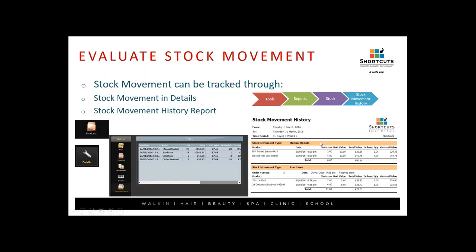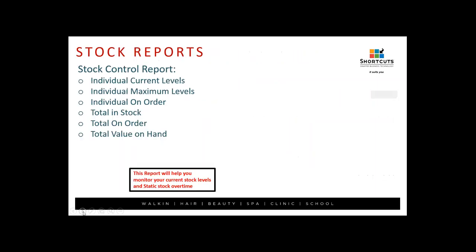There is also a Stock Movement History report, found in Tools, Reports, Stock, then Stock Movement History. This breaks down all products and shows all movement, grouping them together — manual updates together, purchases together, ordering and receiving together, and stock taking together. So you can see movement within areas rather than by individual product. For individual product detail use the Details tab; for an overall view use the Stock Movement History report.